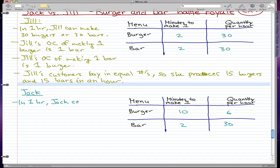So in one hour, Jack can make 6 burgers or 30 bars. So Jack's opportunity cost of making one burger is 5 bars, because there's a one-to-five ratio here.